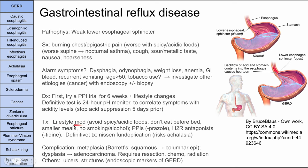Treatment includes lifestyle modifications: avoid spicy and acidic foods, chocolate, lemon juice, eating before bed; have smaller meals; avoid laying down right after meals; no smoking or alcohol. PPIs — drugs ending in -prazole like omeprazole or pantoprazole — are given. H2 receptor antagonists, the ones ending in -tidine like ranitidine, also work. The definitive treatment is Nissen fundoplication, a surgery that tightens the gastroesophageal sphincter. Usually lifestyle modifications and PPIs are sufficient without needing surgery.